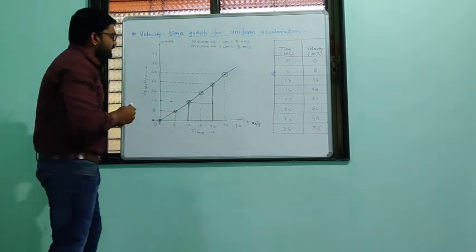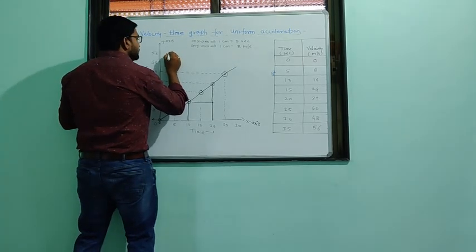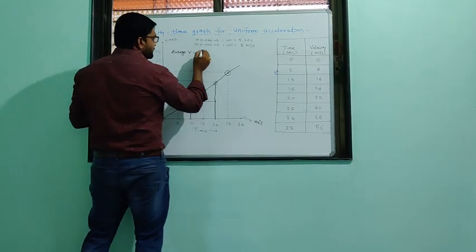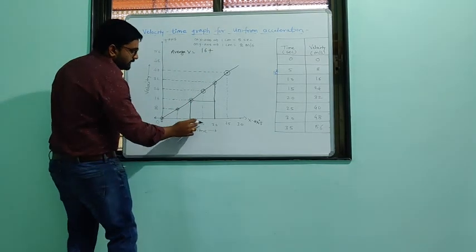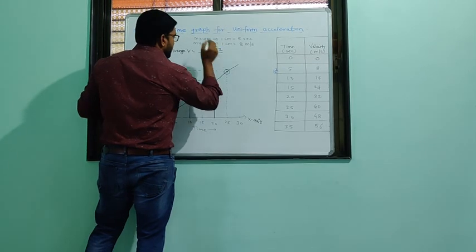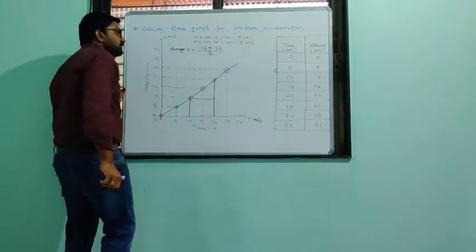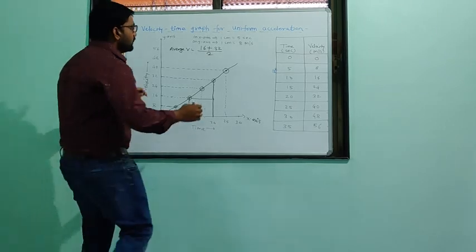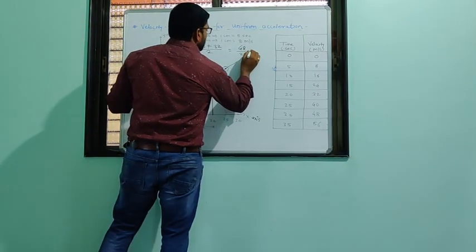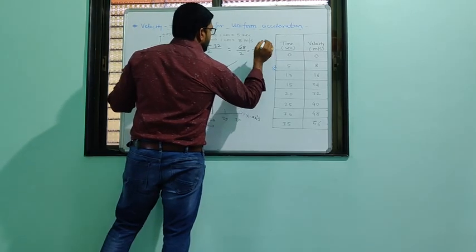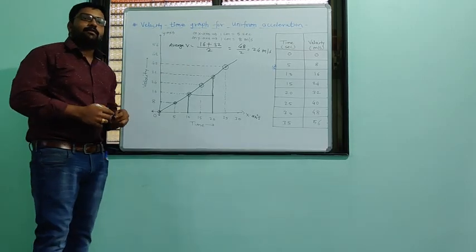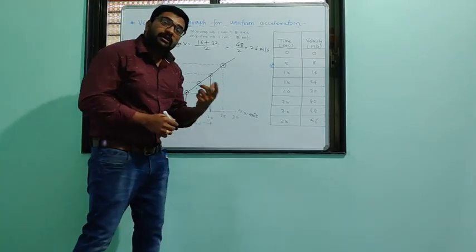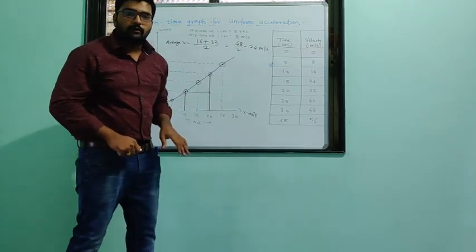Our average velocity = (16 + 32) / 2 = 48 / 2 = 24 m/s. That is the average velocity of this object between 10 and 20 seconds. So in one second it covers 24 meters.